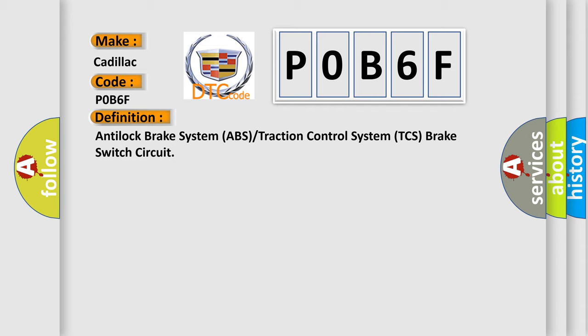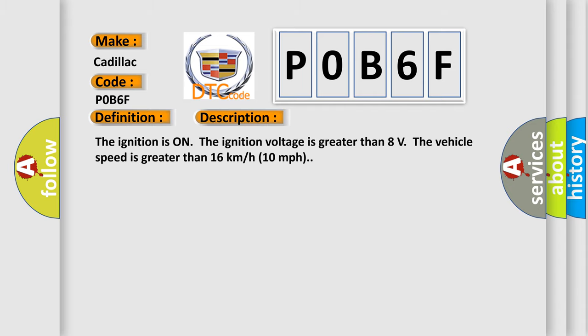The basic definition is Anti-lock brake system ABS or traction control system TCS brake switch circuit. And now this is a short description of this DTC code. The ignition is on, the ignition voltage is greater than 8 volts. The vehicle speed is greater than 16 kilometers per hour, 10 miles per hour.